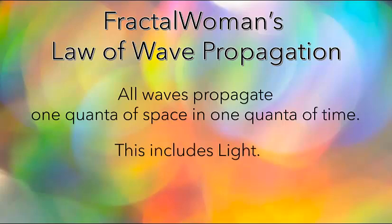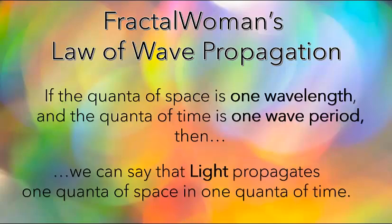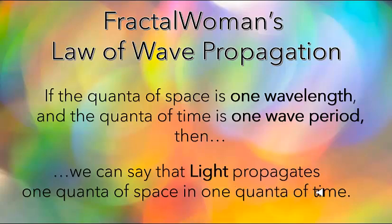All waves propagate one quanta of space in one quanta of time, and of course this includes light. Although this can be applied to all waves, I'm going to primarily be applying this to light. So if the quanta of space is one wavelength and the quanta of time is one wave period, then we can say that light propagates one quanta of space in one quanta of time.